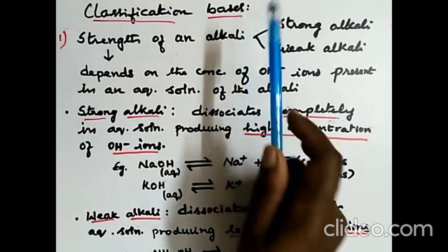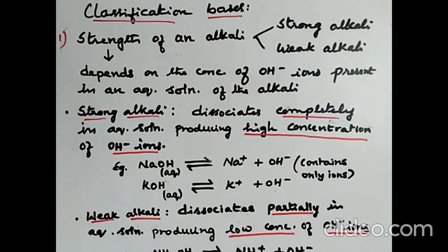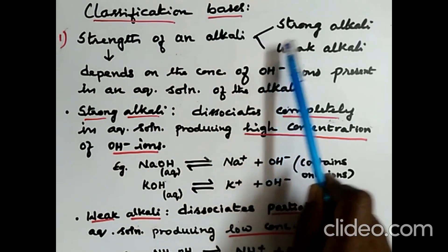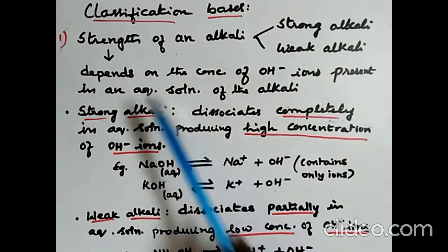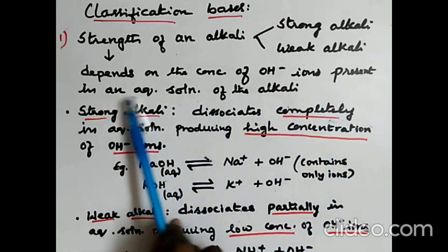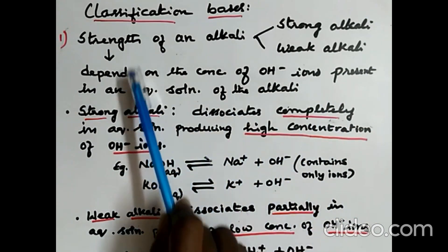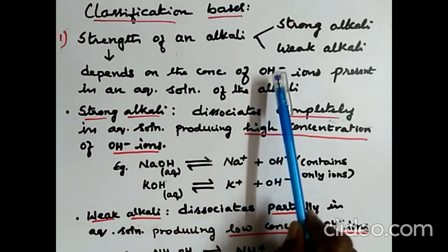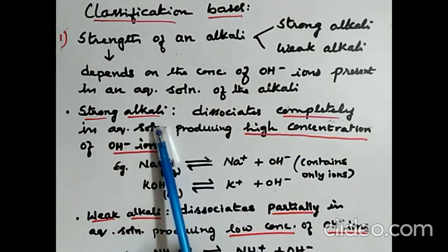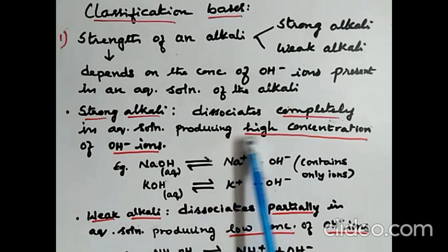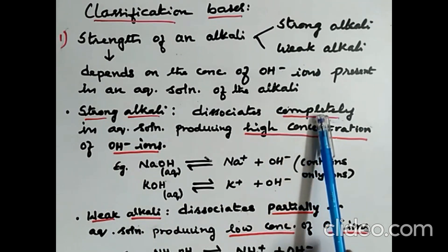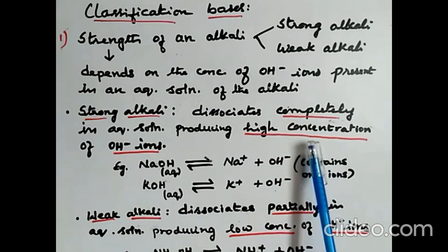Classification of bases. Bases can be classified based on various factors. The first is based on the strength of an alkali. The strength of an alkali depends on the concentration of hydroxyl ions present in an aqueous solution of the alkali. Strong alkalis dissociate completely in aqueous solution producing high concentration of hydroxyl ions — these words are very important.